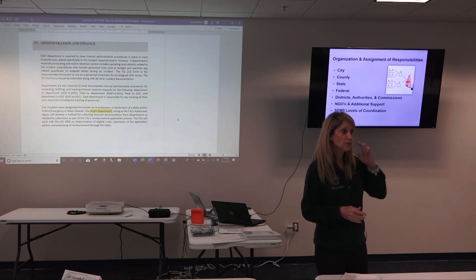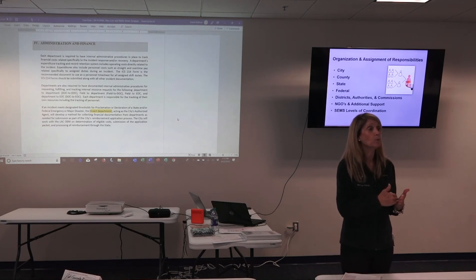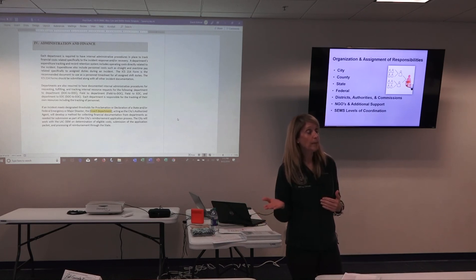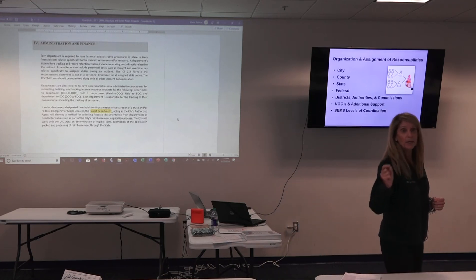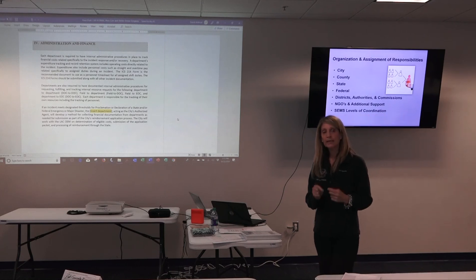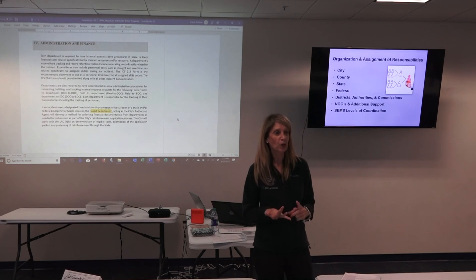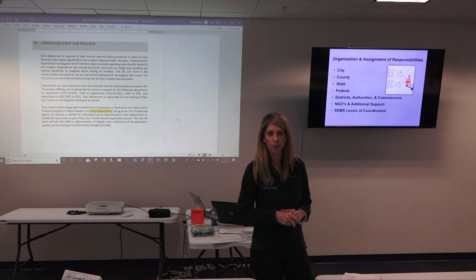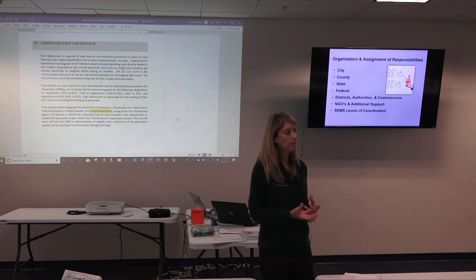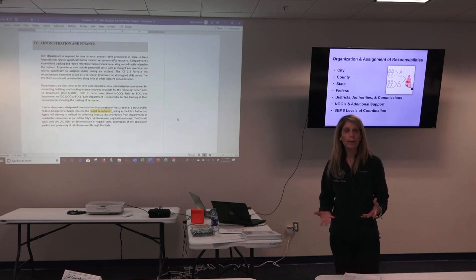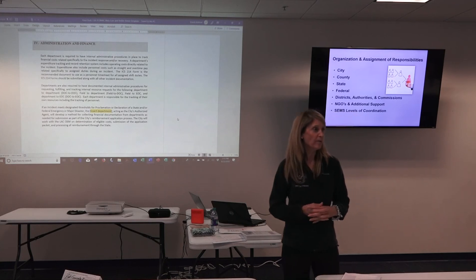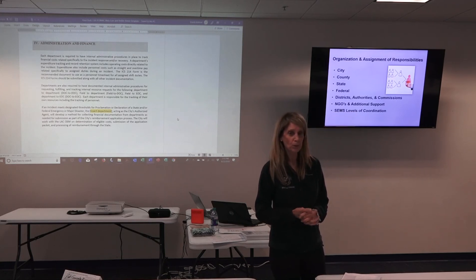The ICS 214 is a very effective document because it records what time you were doing what. It is a recognized document by FEMA as a record of you being assigned specifically to an emergency. If you use regular timesheets, the problem is they don't definitively define emergency hours unless you have emergency codes embedded in your cost-tracking or timekeeping program. If you can pull out hours under a certain code, you can use your regular timekeeping process. If not, the ICS 214 is a really effective form.